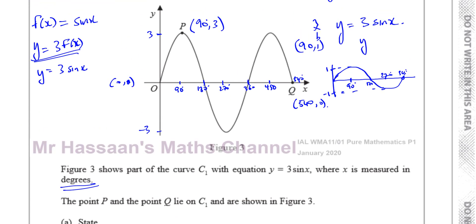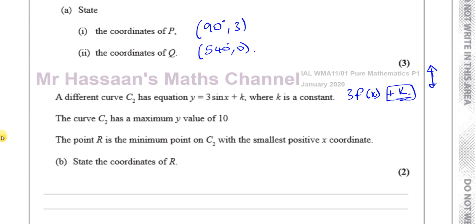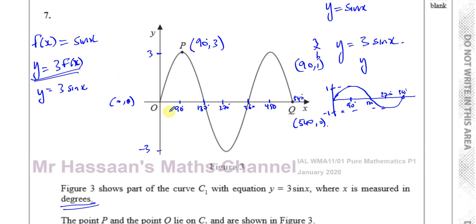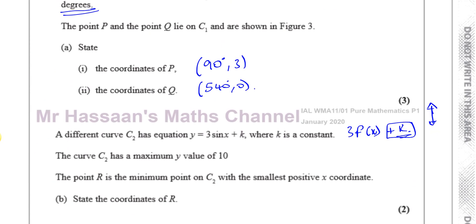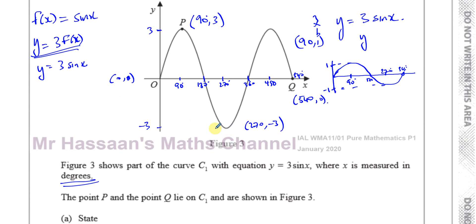So the maximum y value is 10, which means this maximum value 3 went up to 10. The point R is a minimum point on C2 with the smallest positive x-coordinate. The minimum value on the curve is at (270, -3) - that's the lowest value on this curve y = 3sin x. This is the first time it reaches its minimum value, the smallest positive angle at which it reaches its minimum value.